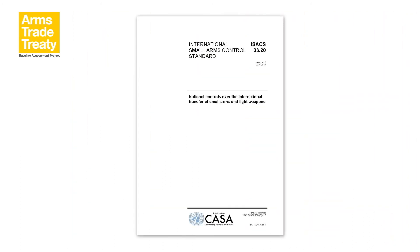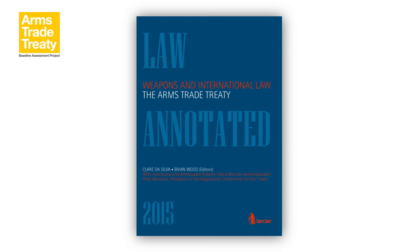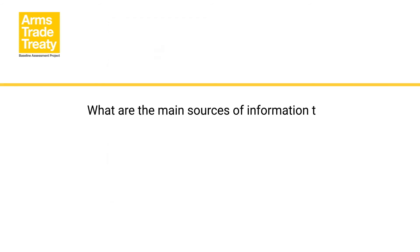Other useful sources of information for establishing reporting processes include: the International Small Arms Control Standard (ISACS) Module 3.20 on national controls of the international transfer of small arms and light weapons, available from the website of the United Nations Coordinating Action on Small Arms (CASA); the chapter on record keeping in 'Weapons and International Law: The Arms Trade Treaty,' edited by Claire de Silva and Brian Wood, published in 2015 by Larsier Press; and the South Eastern and Eastern Europe Clearinghouse for the Control of Small Arms and Light Weapons (SEESAC), which has developed several tools to support reporting on arms transfers by Western Balkan states.